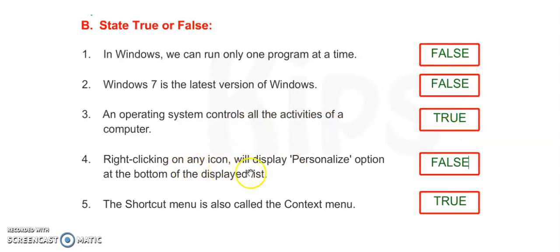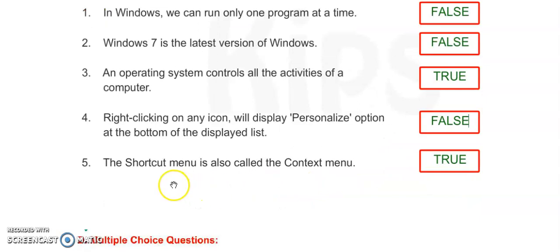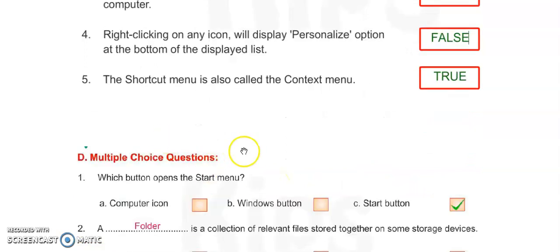Number four: right-clicking on any icon will display personalize option at the bottom of the displayed list. It is also false. Number five: the shortcut menu is also called the context menu. Yes, it is true.